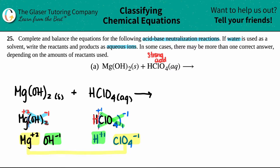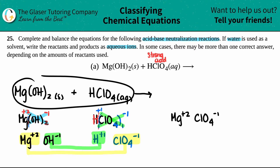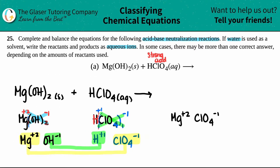Magnesium is going to hook up with the perchlorate, and OH is going to hook up with H-plus. It doesn't matter which one you write first — I like to go from left to right. So I'll do the one with magnesium. We've got Mg being a two-plus charge and ClO4 being a minus one. This two crisscrosses down telling me that there are two perchlorates, and then this one crisscrosses down telling me that I need one magnesium. Since you have two polyatomics, you need parentheses when you write your product: Mg(ClO4)2.